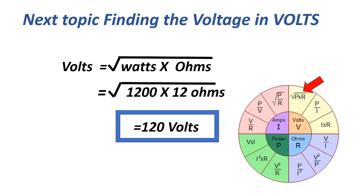The next formula for voltage: volts equals the square root of watts times ohms. Equals the square root of 1200 times 12 ohms, equals 120 volts.